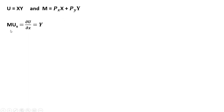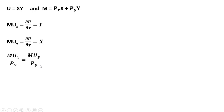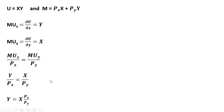First thing we're going to do is get the marginal utility of good X, which is just Y — the partial derivative of the utility function with respect to good X. And then the marginal utility of good Y is just X. Forming our utility maximizing condition, the consumer will spend his or her income such that the marginal utility per dollar is equal across both goods. Making our substitutions into this formula: marginal utility of X is Y, marginal utility of Y is X. And then solving this for Y, we get the following.